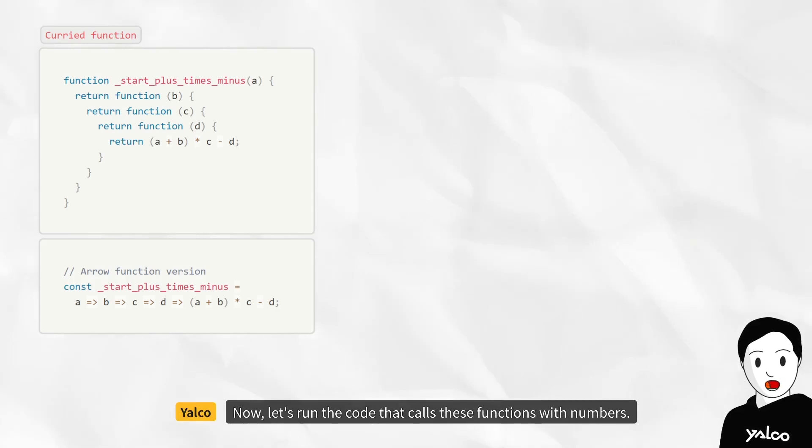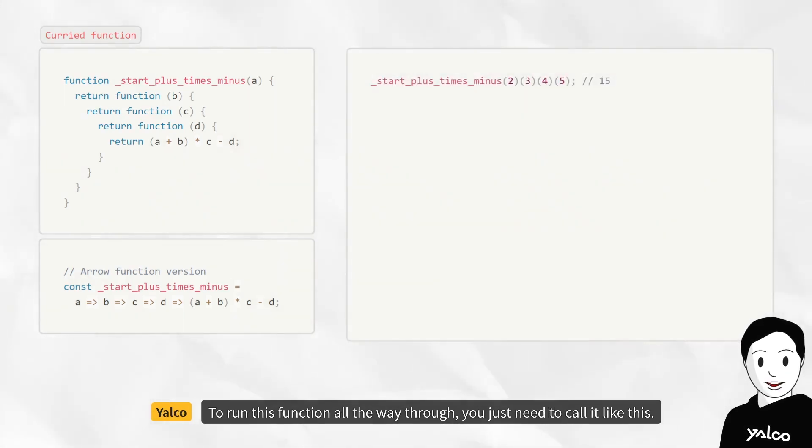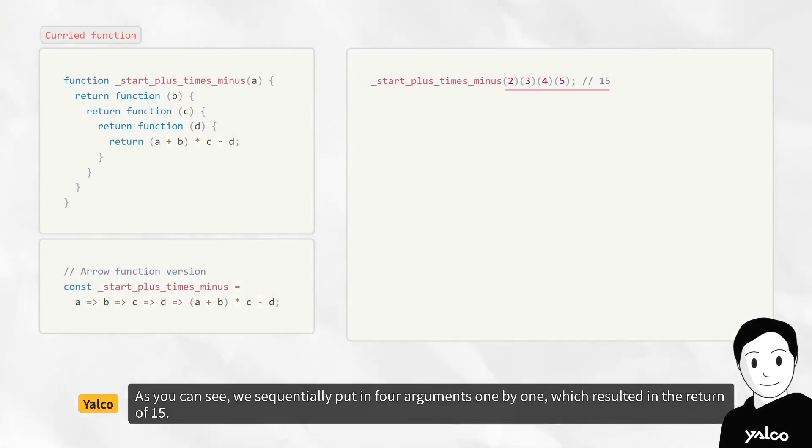Now, let's run the code that calls these functions with numbers. To run this function all the way through, you just need to call it like this. As you can see, we sequentially put in four arguments one by one, which resulted in the return of 15.